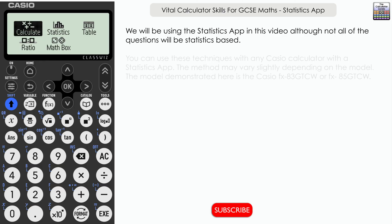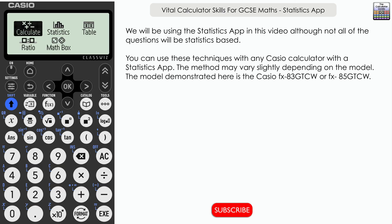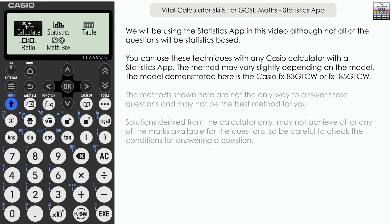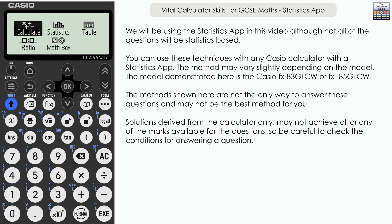I'm doing this on an FX 83 GT CW model of calculator. You may have that model or something very similar — as long as you've got the statistics app, you should be able to follow along. If you have an older model, you may need to do a slightly different method. Also, the methods shown here are certainly not the only methods, and may not be the best method for you.